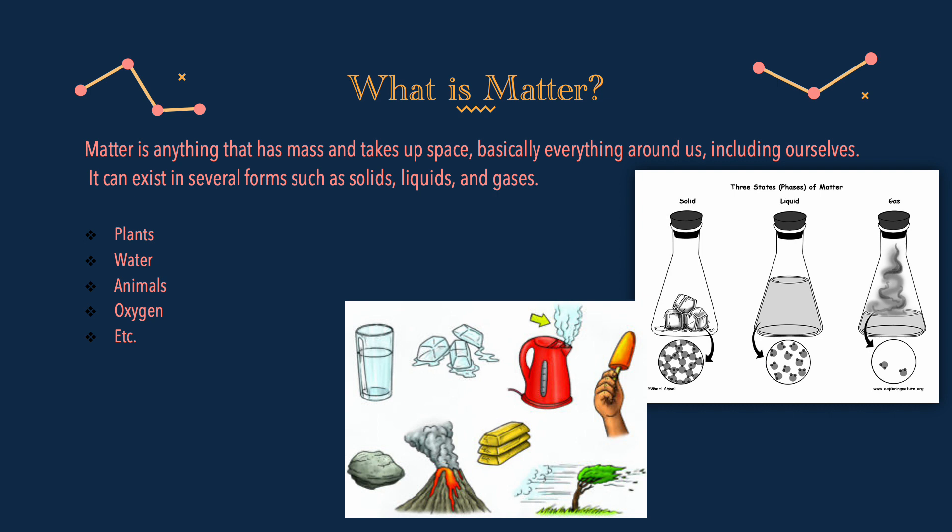What is matter? Matter is anything that has mass and takes up space, basically everything around us, including ourselves. It can exist in several forms such as solids, liquids, and gases. For example, plants, water, animals, oxygen, etc.